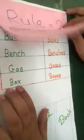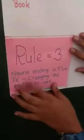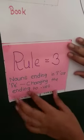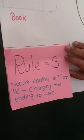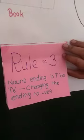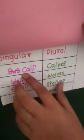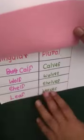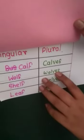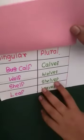The rule number 3 is, nouns ending in F or FE change the ending to VES. This means the noun that ends with F or FE, we should add VES. For example: calf becomes calves, wolf becomes wolves, shelf becomes shelves, leaf becomes leaves. This F has been converted into VES. F has been converted into VES. F is converted into VES.